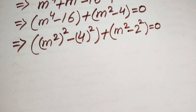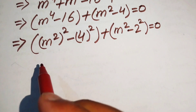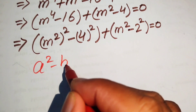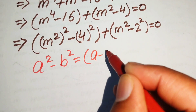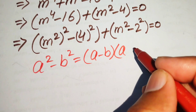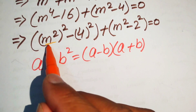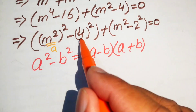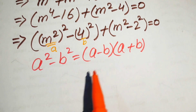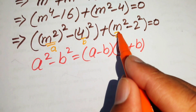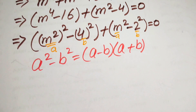In the next step we use the difference of squares identity: a squared minus b squared equals (a minus b) times (a plus b). We need this formula to simplify our equation. Here the value of a is m squared and the value of b is 4. Similarly, the value of a is m and the value of b is 2.